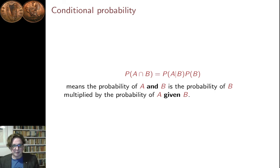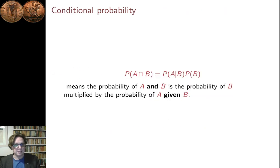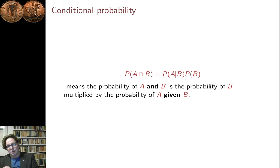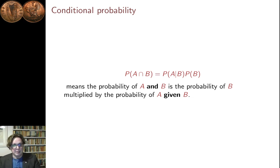Finally, we can multiply across the rule. If we multiply across by P of B, we get that the probability of A intersection B is the probability of A given B multiplied by the probability of B. That makes sense: the probability of A and B equals the probability of B times the probability that, given you have B, you get A. So the probability of A and B is the probability of B, and then given that you have B, the probability that you get A. That's it — quick lecture. I'll do another lecture with a couple of examples. Thank you very much.